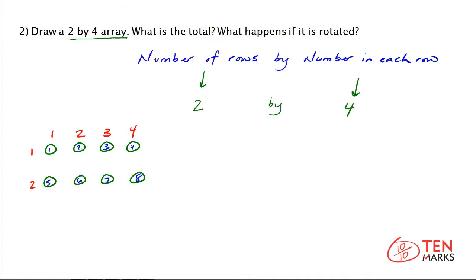The second part of this problem asks what happens if you rotate this array. Rotating this array means that you would switch the number in each row and the number of rows. If we originally had a two by four, when we rotate that, you're going to have a four by two array, which means four rows with two in each row.